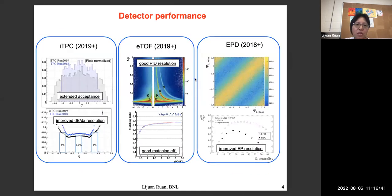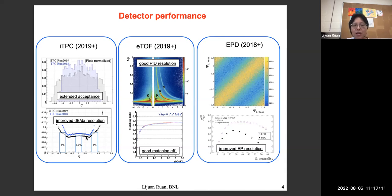Here are a few performance plots for the inner TPC. The acceptance plot shows that with the inner TPC upgrade, we can extend our pseudo-rapidity coverage from 1 to 1.5. It also improves the dE/dx resolution — with TPC alone shown in blue, and with the ITPC upgrade shown in black.